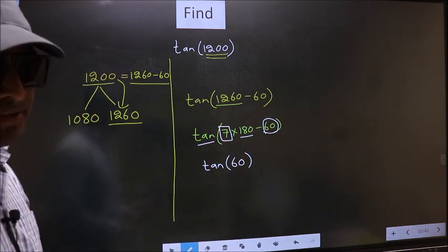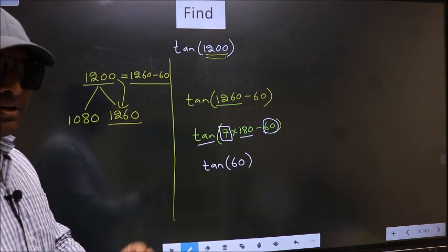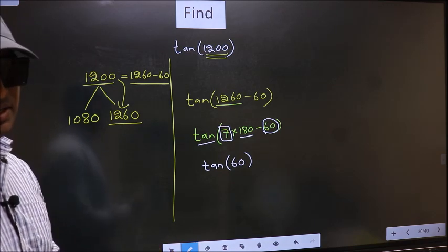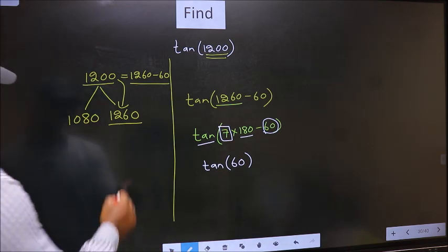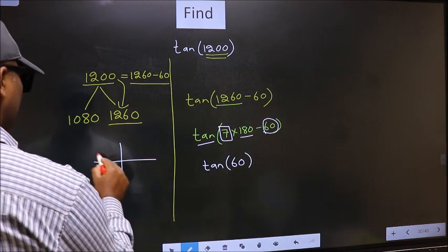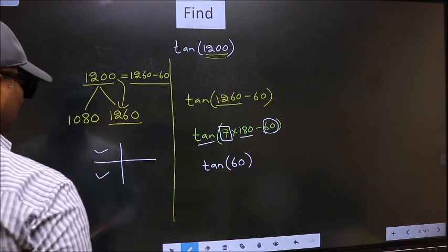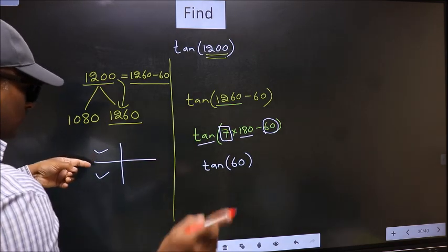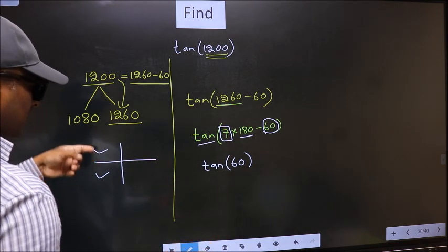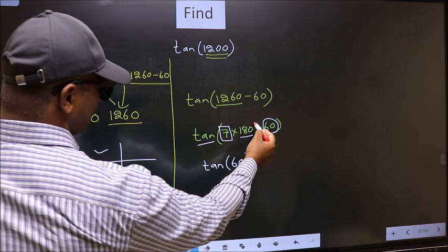And 7 is odd. And all the odd multiples of 180, they lie in either the second or the third quadrant. So now to select the quadrant, we should look at this symbol.